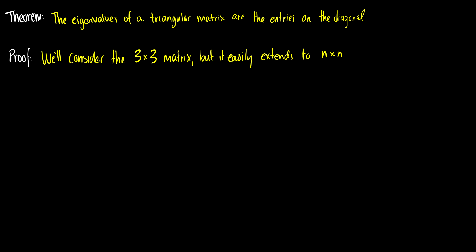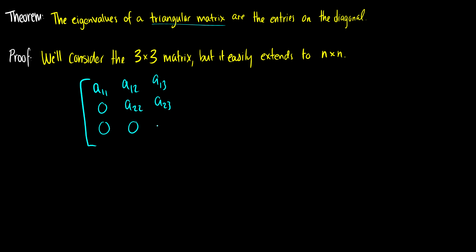Now let's move to an important theorem for quickly finding eigenvalues: the eigenvalues of a triangular matrix are the entries on the diagonal. This has a connection to determinants, which we'll explore in the next video. For a visual demonstration, let's consider a 3×3 upper triangular matrix with entries a11, a12, a13 in the first row, 0, a22, a23 in the second, and 0, 0, a33 in the third.